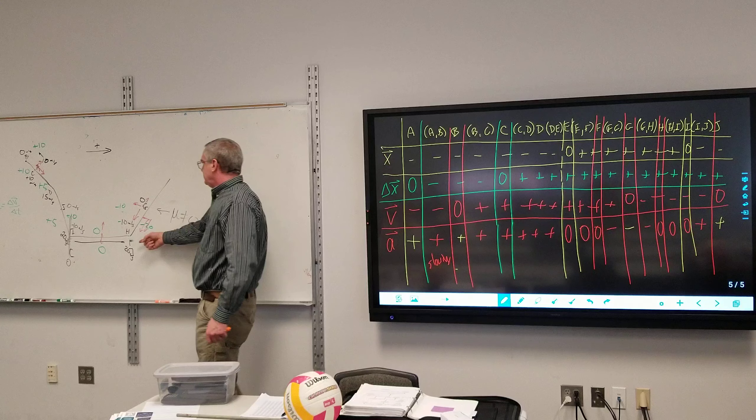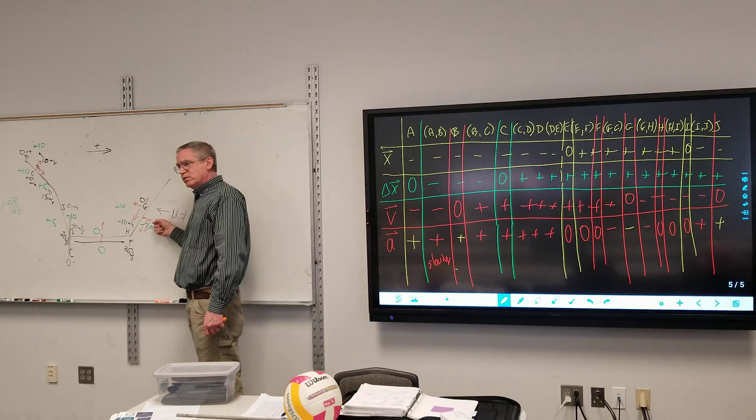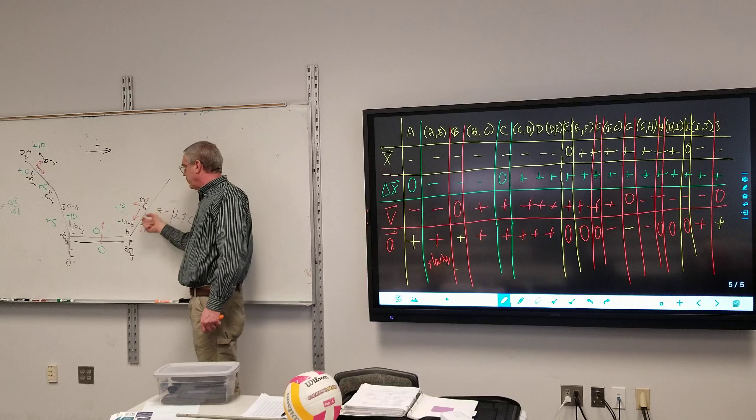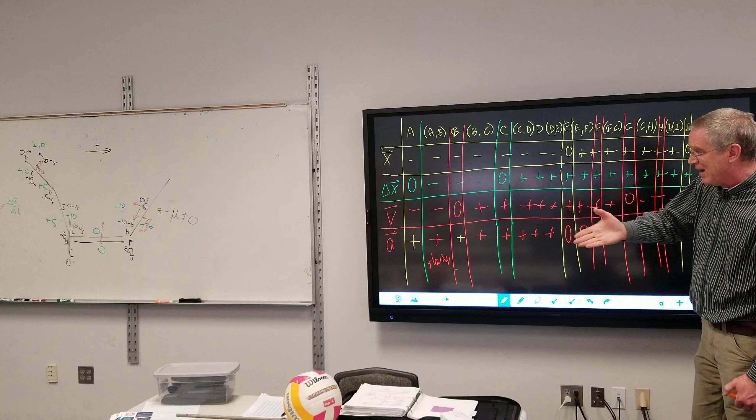As it's going up the ramp here, I have two forces trying to pull it back down. The weight of it and the friction force are both trying to stop it from going up the ramp. So it is negative in that region because both forces have that negative component.